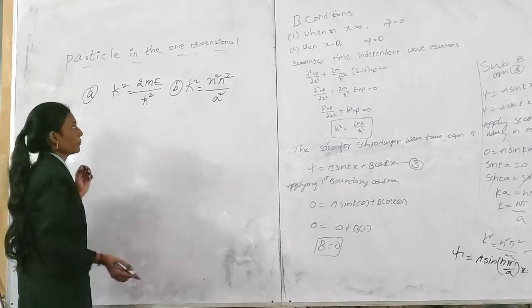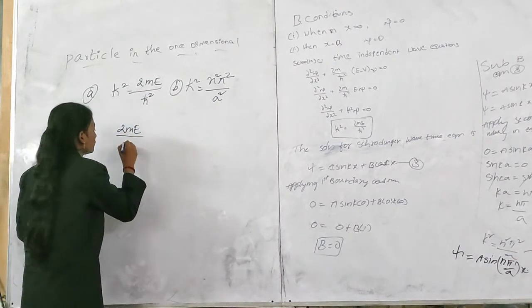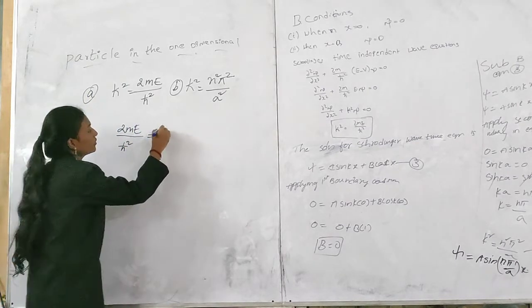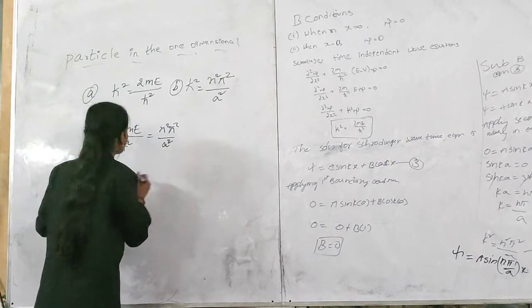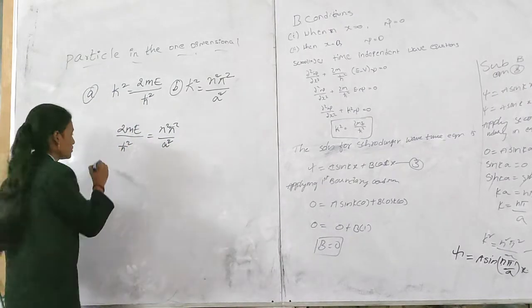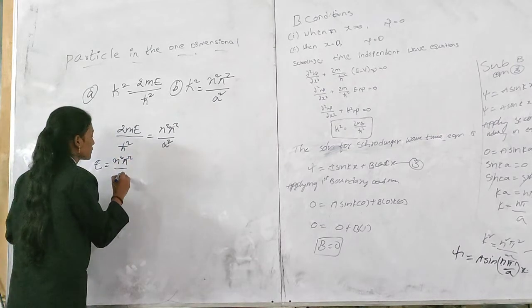So from equations J and B, we have energy equal to n squared phi squared by a squared.